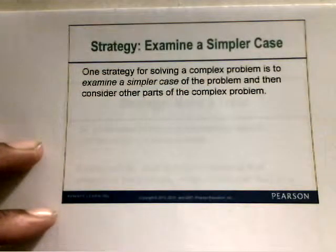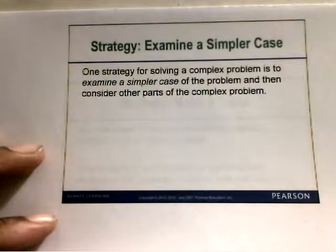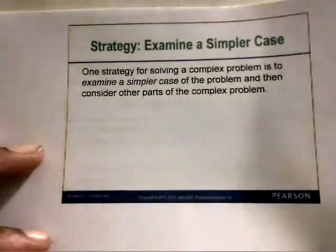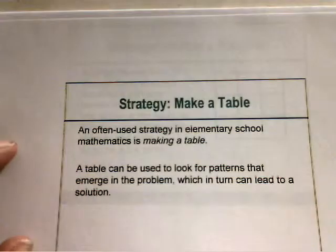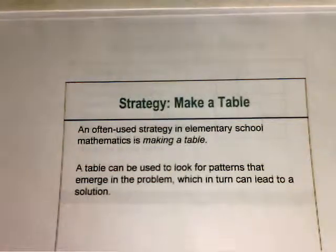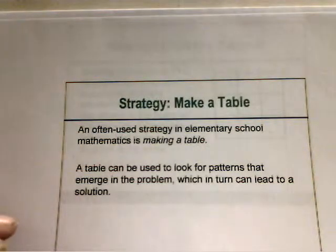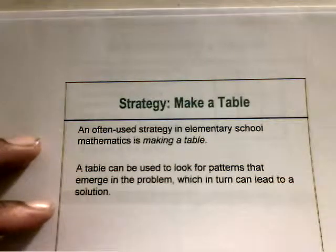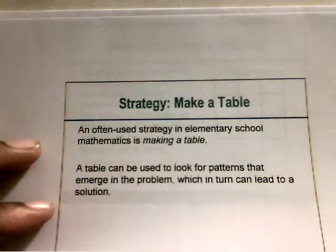Examining a simpler case is another strategy. One strategy for solving a complex problem is to examine a simpler case of the problem, and then consider other parts of the complex problem. Another strategy would be making a table. An often-used strategy in elementary school mathematics is making a table, which can be used to look for patterns that emerge in the problem and lead to a solution.